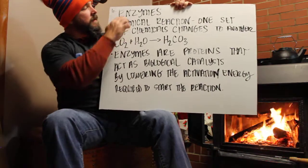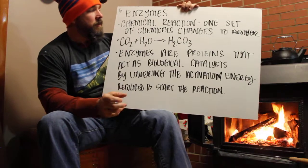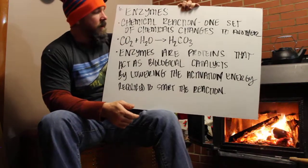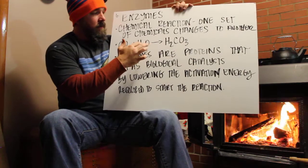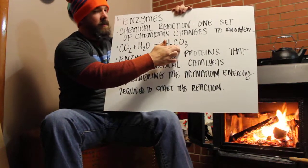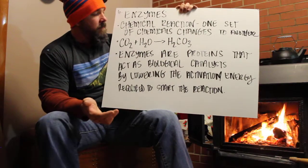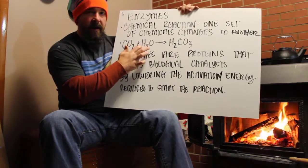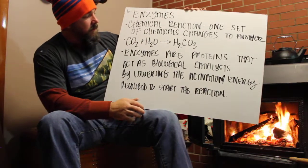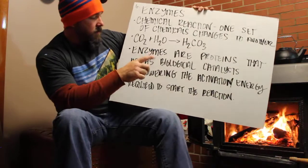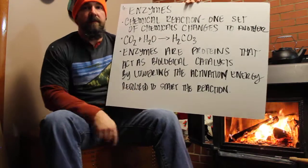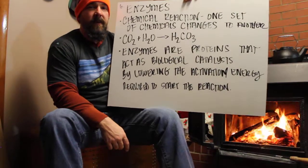The last thing is enzymes. A chemical reaction is when one set of chemicals changes to another. This right here is the chemical reaction for your body getting rid of carbon dioxide. The carbon dioxide combines with oxygen and then forms carbonic acid. This carbonic acid can be dissolved in the blood and taken out of the body — otherwise you wouldn't be able to get rid of your carbon dioxide. But if you didn't have enzymes speeding up this reaction, you would retain all that carbon dioxide and not be able to get rid of it. Enzymes are proteins that act as a biological catalyst by lowering the activation energy required to start the reaction, so that the reaction happens faster.